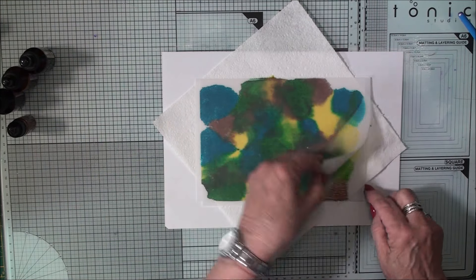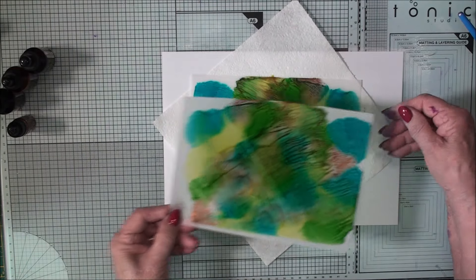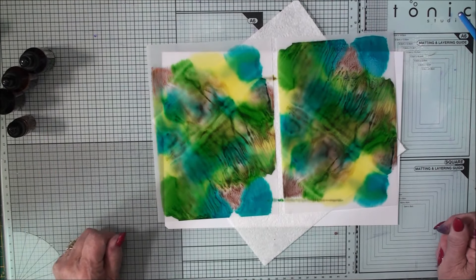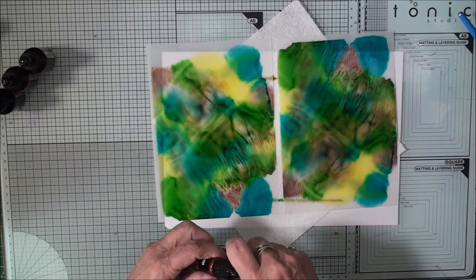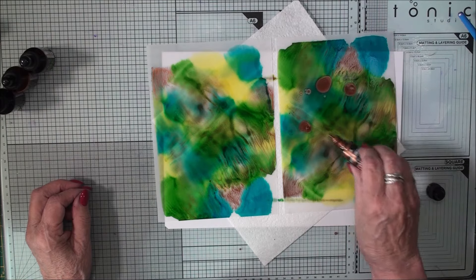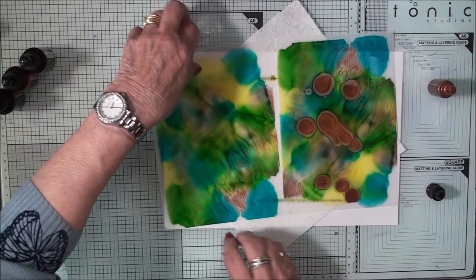Now, once you lift that up, you will have two pieces that have the same colours on them. You can add more colour in there if you wish. So we'll add a little bit more copper. And we'll add the paper on the top again.